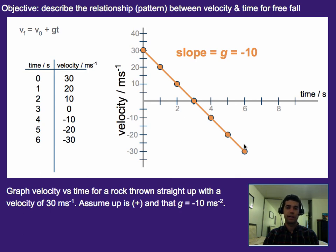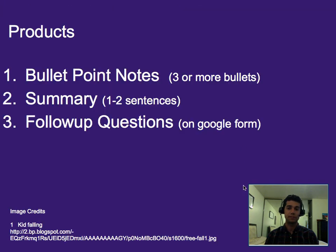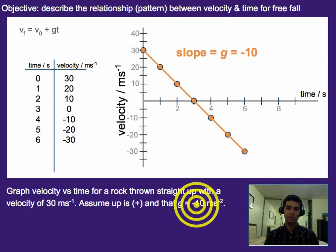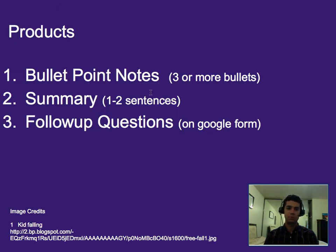So if we look at this, we can actually calculate the slope and it comes out to a slope of negative 10 because that is what we are using for our value for gravity here. So in this case, graphs will always have a slope equal to gravity if you're graphing something in free fall. That's it for this one. Three or more bullet points worth of notes, a one to two sentence summary, and your follow-up questions on Google Forms, please.